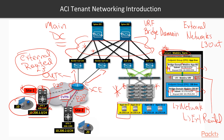I've color-coded the topology: everything for the App EPG is yellow, and we have two VMs running in the virtual environment. For the DB EPG we also have two VMs. The goal is to allow communication from Site 1 and Site 2 to both environments — but with an interesting constraint: Site 1 can only reach Server 1, and Site 2 can only reach Server 2, for both App and DB tiers.